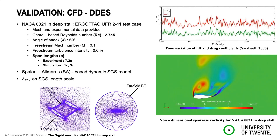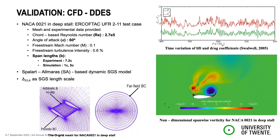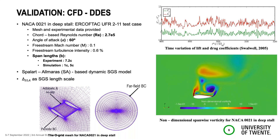I want to give some details about the DES. What you see in the upper right corner is the experimental data provided on the project page. There are some difficulties because you need some initial transient time before you can record data, since the flow is quite unsteady and three-dimensional at 60 degrees angle of attack. The span size also matters if you want to compute it correctly. In the experiments, they used a span size of 7.2 chord lengths, and they had to wait for some initial non-dimensional time to start recording correct lift and drag data.